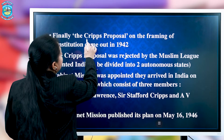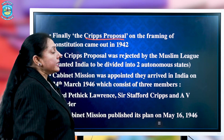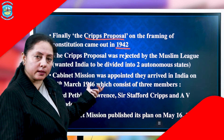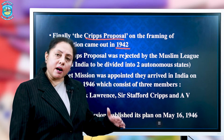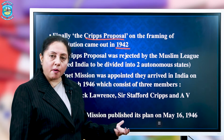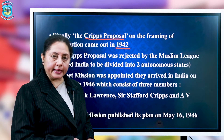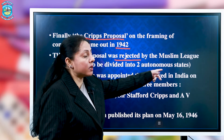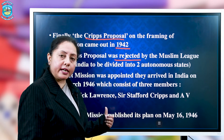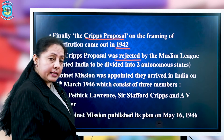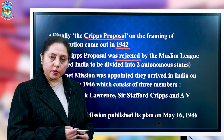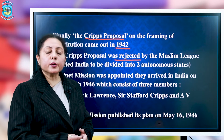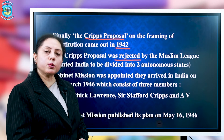Finally, the Cripps proposal on the framing of the Indian constitution came to India in 1942. Sir Stafford Cripps was in charge of the Cripps proposal. He proposed that after the end of the World War, a constituent assembly would be formed to draft the constitution of India. But the Muslim League rejected the proposal because they wanted two autonomous states — Pakistan and India — to be separated. Even the INC did not like the proposal because the princely states were also being given autonomy for independent states. The INC proceeded with the Quit India movement and the Cripps mission was a total failure.